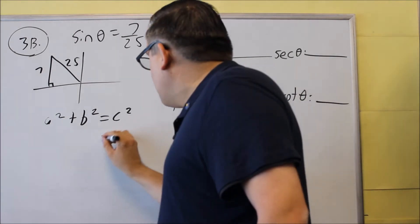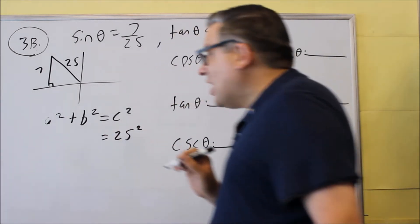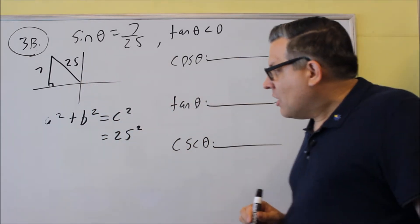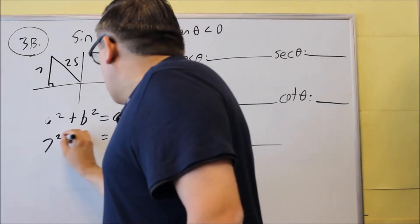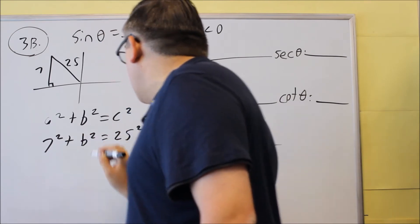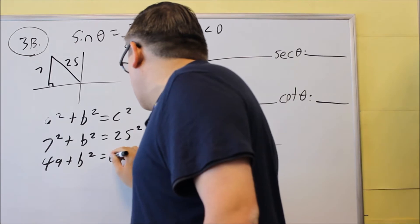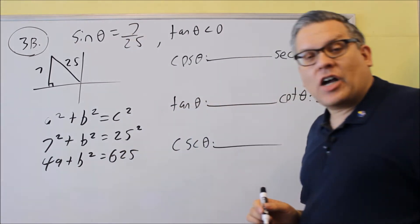And now this time, the c is given to us as twenty-five. That's opposite the right angle. So we put that in there for c. And then a and b we have 7² + b² = 25². This is forty-nine, forty-nine plus b² equals, this will be six twenty-five when you square that.